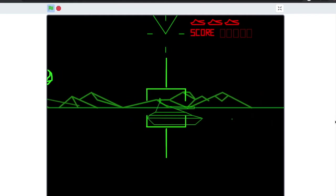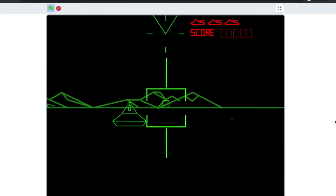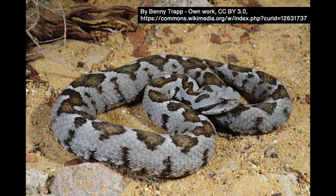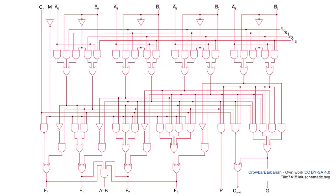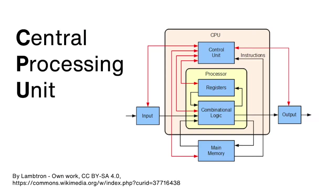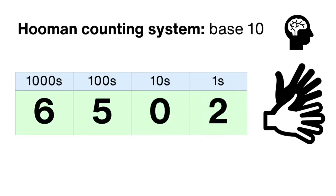Electronic circuits that can do sums very quickly are called adders. Lots of them are wired together to form the arithmetic logic unit in the processor at the heart of every computer, tablet, phone, and many electronic devices like TVs and washing machines. Humans usually count in a system based around the number 10 because we have 10 fingers.